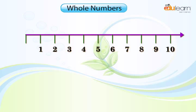Or we can say the counting numbers as natural numbers. When 0 is included to the series, it is named as whole numbers.